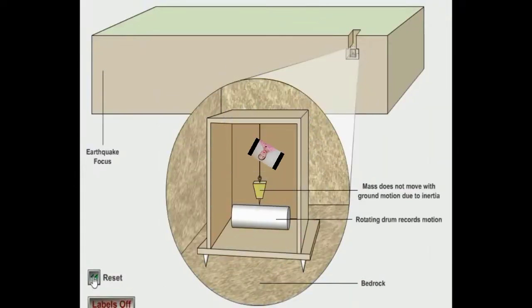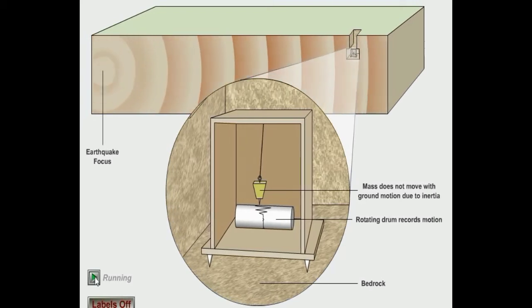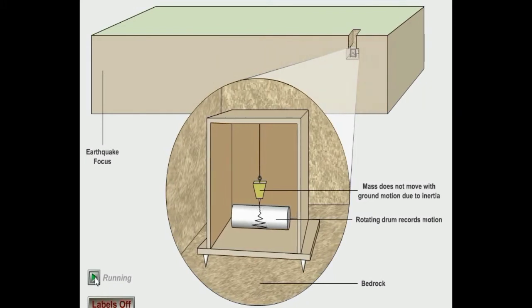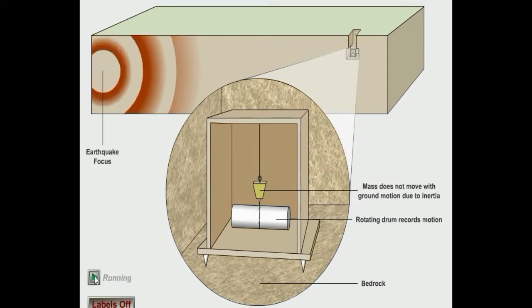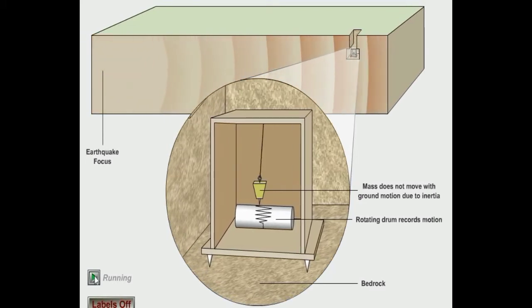Ang mga seismologist ay gumagamit ng instrumento na kung tawagin ay seismograph upang makapag-record sila ng mga data o mga detalye tungkol sa mga seismic waves. This is how a seismograph works. When there's an earthquake, the seismic waves are detected by the seismograph. The seismograph yields information that can help seismologists and scientists not only about earthquake behavior but also about the structure of the Earth itself.